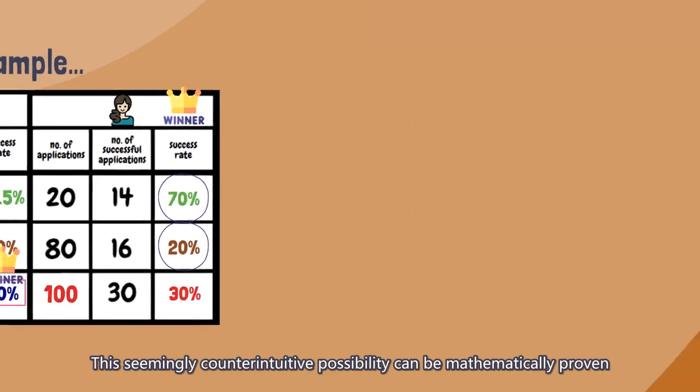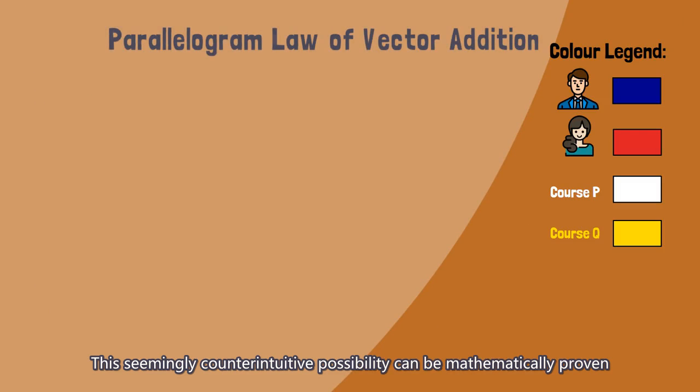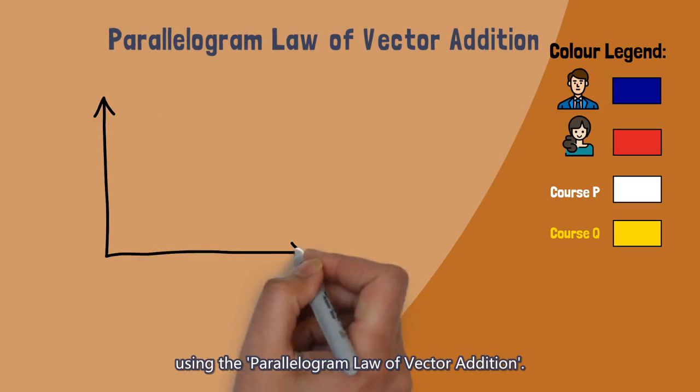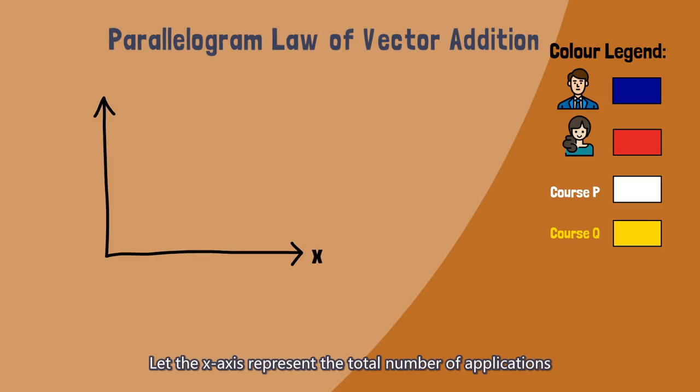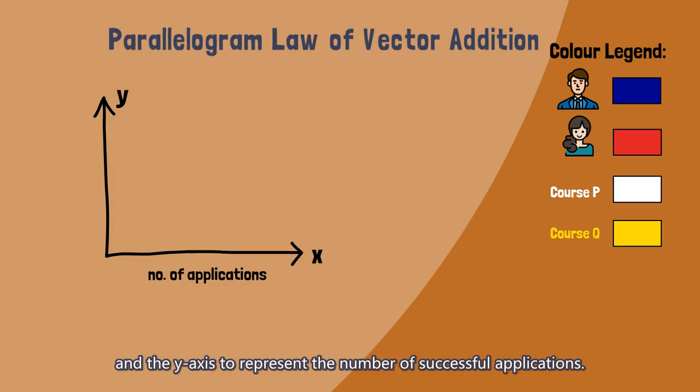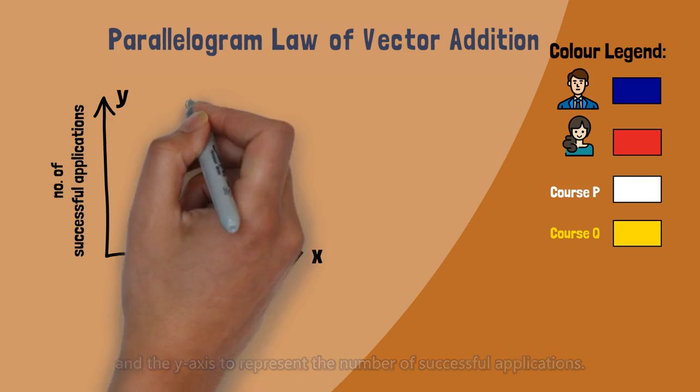This seemingly counterintuitive possibility can be mathematically proven using the parallelogram law of vector addition. Let the x-axis represent the total number of applications and the y-axis represent the number of successful applications.